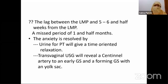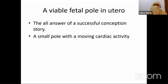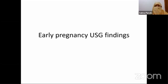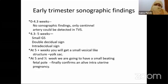Initially, you can go for a pregnancy test of urine and then transvaginal ultrasound. It may only show a sentinel artery — a dilated artery supplying the growing gestational sac. A yolk sac may appear by five weeks. The all-important answer to a successful conception study is a viable fetal pole in utero. Early trimester sonographic findings: from 0 to 4.3 weeks, there are no sonographic findings. Only a sentinel artery can be detected on TVS at around four weeks.